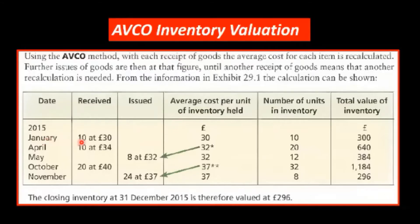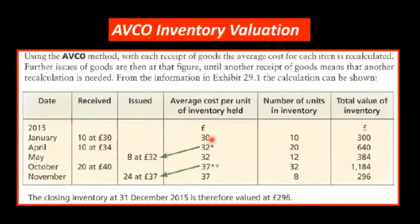In January, we buy 10 at 30. So our total cost would be 300. And we divide by the number in units — 10 — we get the average cost of 30.